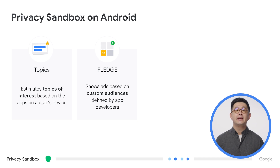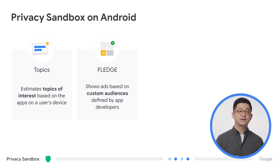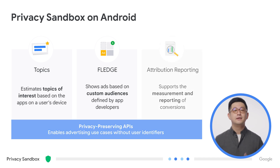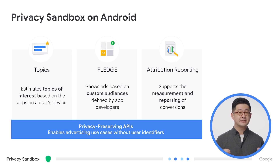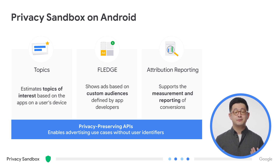The FLEDGE API helps orchestrate ad selection workflows and show remarketing ads based on custom audiences defined by app developers. The Attribution Reporting API supports the measurement of impressions, clicks, and conversions of an ad, and sends reports to advertisers that detail the performance of their advertising campaign while still protecting the privacy of the users who interacted with the ad. Together, these three initiatives form the privacy-preserving ads APIs that you will find across both the web and the Android Privacy Sandbox solutions.